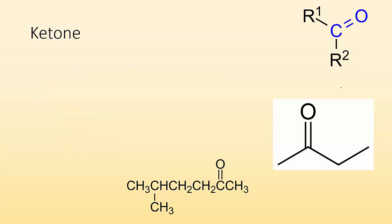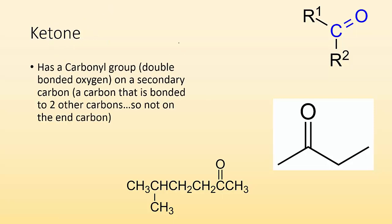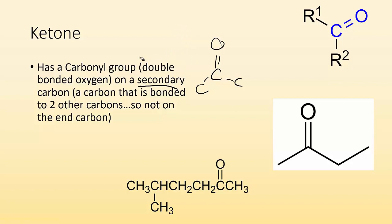Ketones — you're looking for a double bond O in the middle, which is even in the name. It has a carbonyl group — a carbon that's double bonded to an oxygen — on a secondary carbon, meaning that carbon is connected to two other carbons, one on either side. So it's not on the end carbon. You're looking for C double bond O in the middle of a carbon chain.